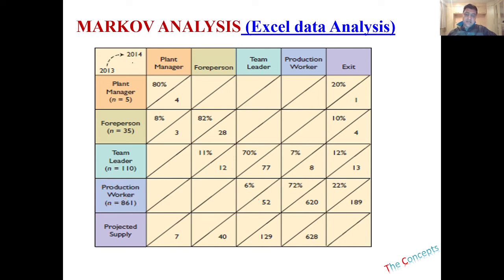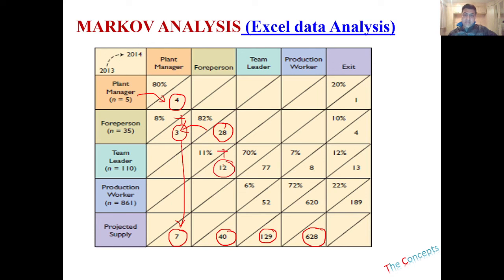How do we get projected supply after plotting our Markov analysis? At the plant manager level, four remain plus three promoted from foreman gives a total of seven. For the foreman level, 28 already there plus 12 promoted from team leader equals 40 people. Same for team leader: 77 plus 52 is 129, and for production workers: 8 plus 620 is 628. This is how you get the supply of your people in the next year.